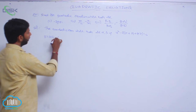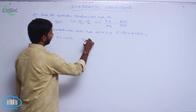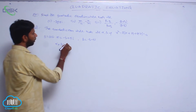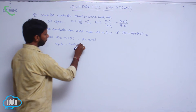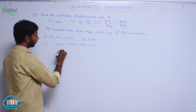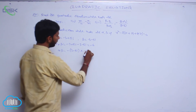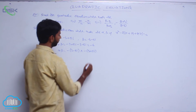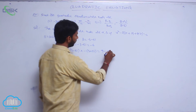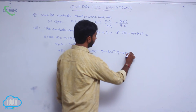For the first one, let alpha = minus 3 plus 5i and beta = minus 3 minus 5i. Then alpha plus beta = minus 3 plus 5i minus 3 minus 5i = minus 6. And the product of roots alpha·beta = (minus 3 minus 5i)(minus 3 plus 5i) = 9 minus 25i squared = 9 plus 25 = 34.